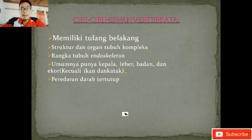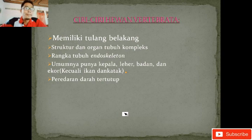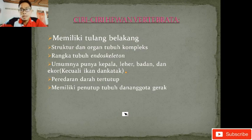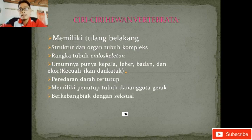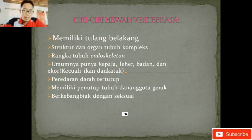Peredaran darahnya tertutup, artinya darah yang ada di dalam tubuh ketika kulit kita disayat maka darahnya akan keluar, itu namanya peredaran darah tertutup. Memiliki penutup tubuh dan anggota gerak. Penutup tubuh bisa berupa bulu, kulit, ataupun sisik. Anggota gerak bisa berupa perut, sirip, kaki, tangan, dan sebagainya. Berkembang biak dengan cara seksual, di mana terjadi pertemuan antara sel kelamin jantan dan sel kelamin betina.